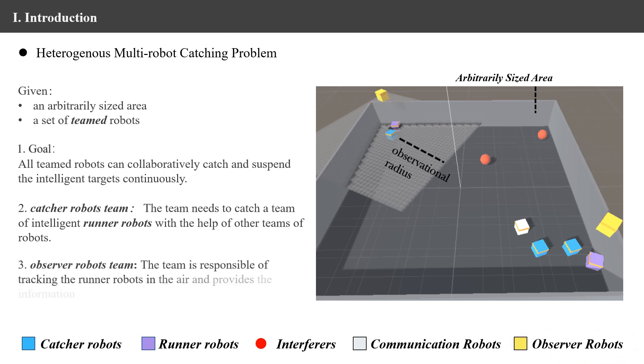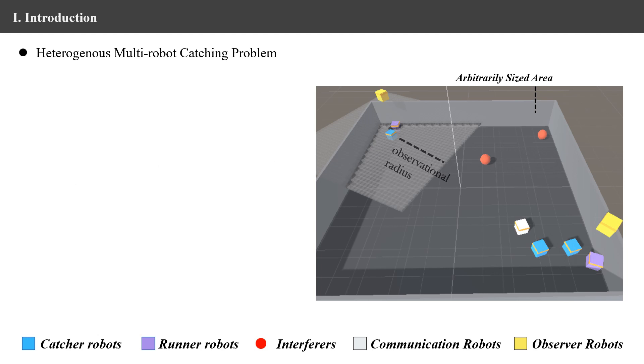The team of observer robots has a larger observational space and is responsible for tracking the runner robots in the air. It provides the information of runner robots to the team of catcher robots.